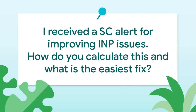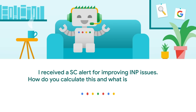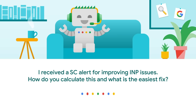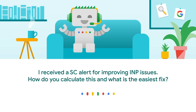Alejandro submitted a question: today I received a Search Console alert regarding improving INP issues. How do you calculate this data and what is the easiest way to correct it? I don't have a full answer here, but there's quite a bit of documentation on Interaction to Next Paint, or INP for short, on the web.dev site. I'd recommend checking that out if you're interested in improving your scores there. Keep in mind that INP is not yet a part of the core web vitals, and that core web vitals is just one of many things that play a role in our helpful content systems. While improving INP can definitely help user experience, I wouldn't expect it to visibly change search ranking.